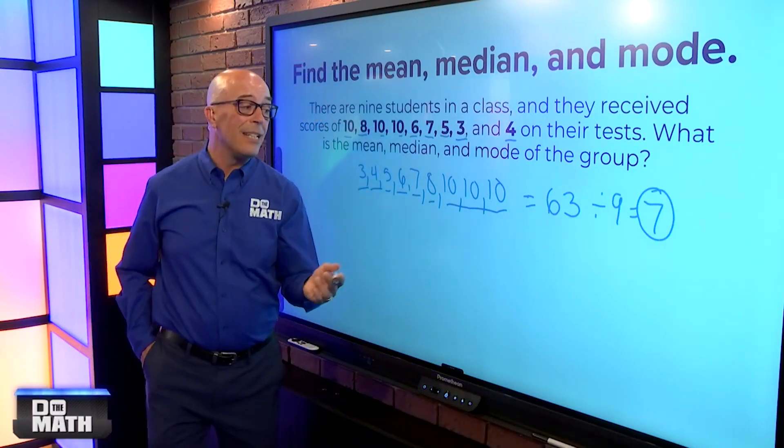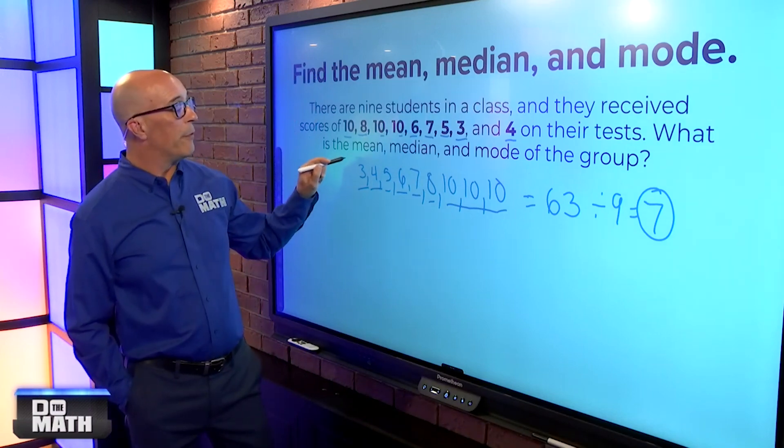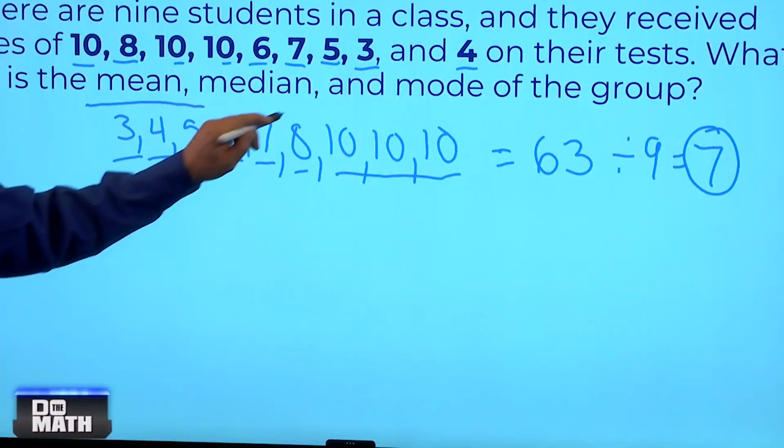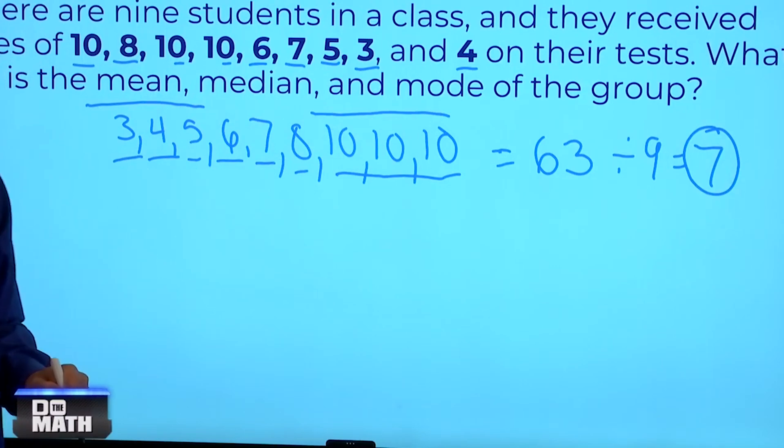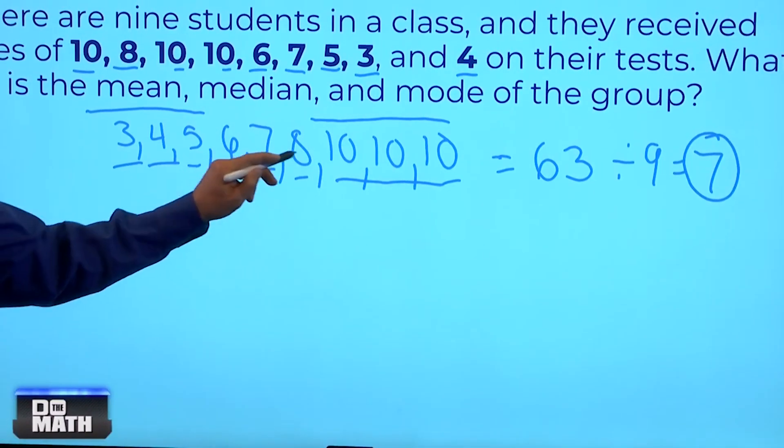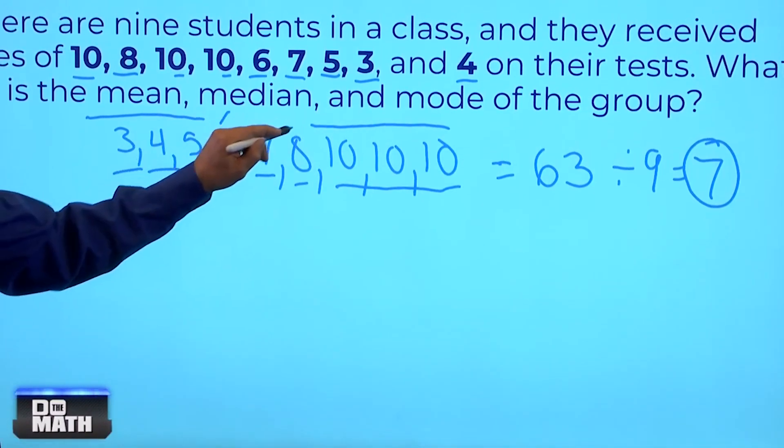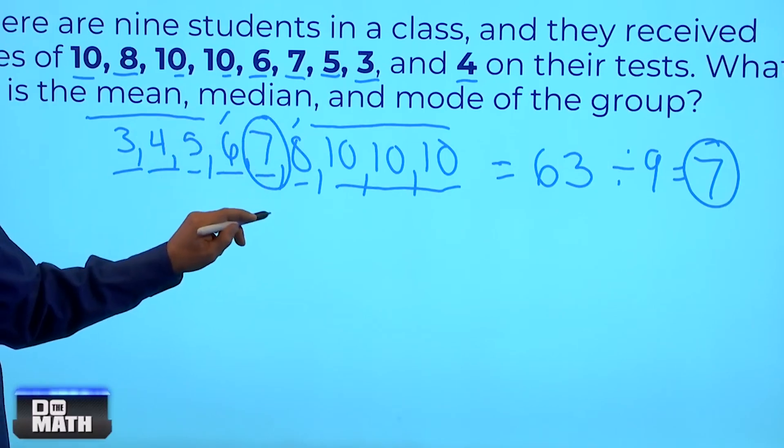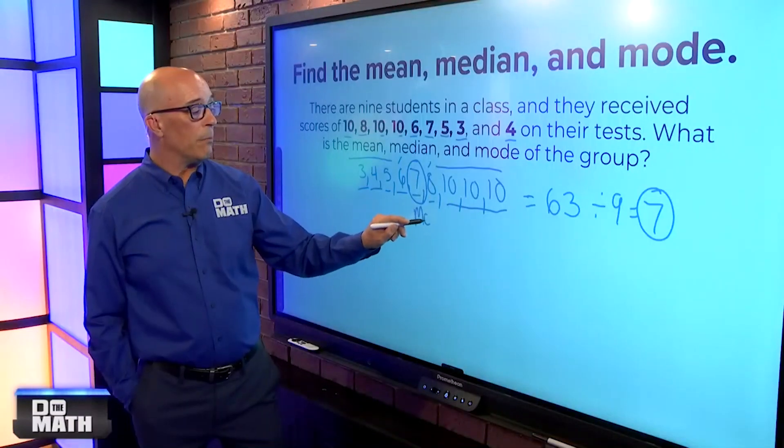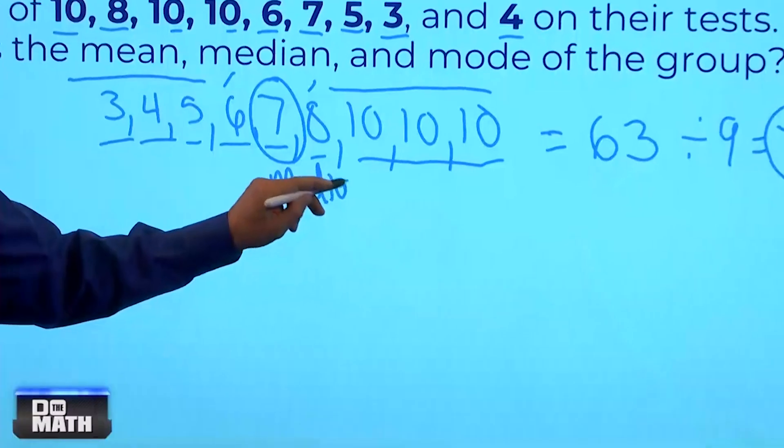Now, the median is the number in the middle. So, we can see that we have three numbers in the beginning here, and we can take three numbers off each end. Now, we have three numbers in the middle, one there, and one there. So, the number in the middle is 7. So, the median is also 7.